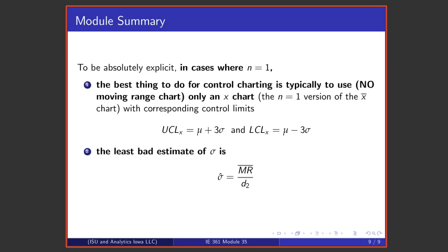To recapitulate: when faced with control charting for sample sizes of one, the best thing to do is to simply make an X chart and not make a moving range chart. In addition, the best estimate — not a perfect estimate, but the least bad estimate — one can make of process standard deviation is an average moving range divided by little d2 based on two observations.